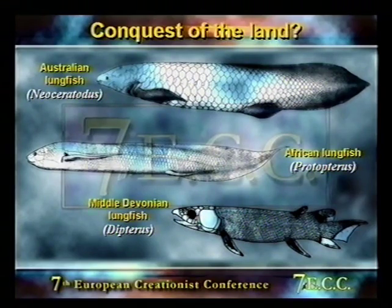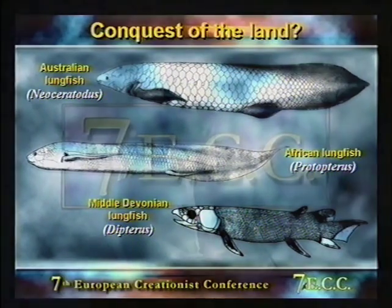Some workers described lungfishes as amphibians, whereas others like Sir Richard Owen were convinced they should be classified as fishes. The consensus was that yes, these were fishes, but the most tetrapod-like of fishes. Some Darwinists such as Ernst Haeckel regarded the uncertainty about their classification as evidence of their transitional or ancestral status. In 1870, the Australian lungfish was discovered and initially described as an amphibian also.